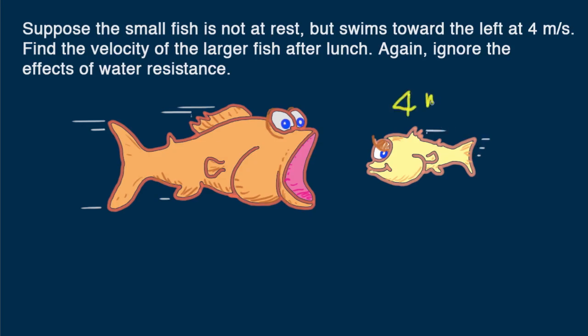Suppose the small fish is not at rest but swims toward the left at 4 meters per second. Find the velocity of the larger fish immediately after lunch. Again, ignore the effects of water resistance.